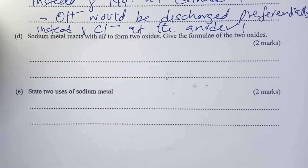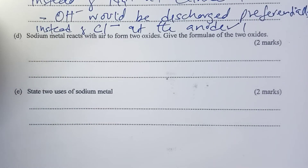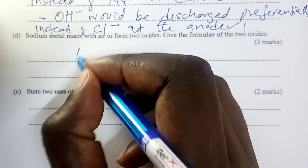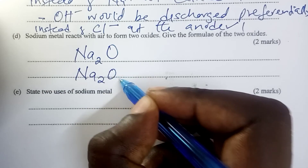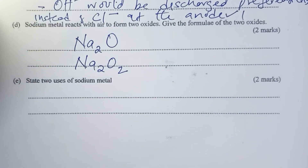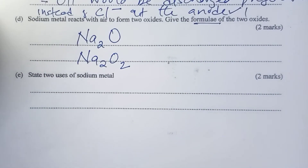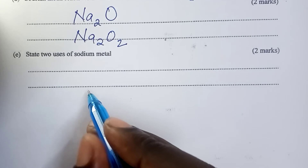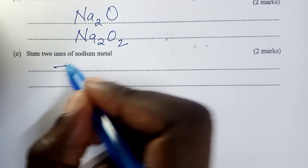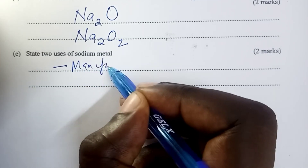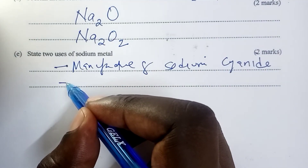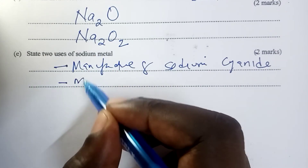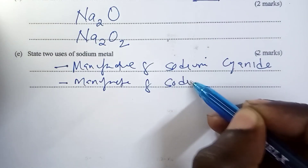Moving to part D: sodium metal reacts with air to form two oxides — give the formulae of the two. So we have ordinary sodium oxide (Na₂O) and we also have sodium peroxide (Na₂O₂). The names were not acceptable because the examiner insisted on the formulae of the oxides. Finally, as has been the case with the other years, we are asked to give two uses of sodium: we can mention manufacture of sodium cyanide and manufacture of sodium peroxide.